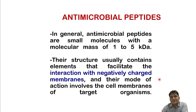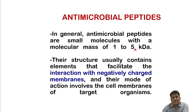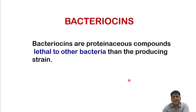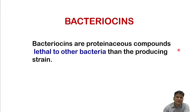Antimicrobial peptides are found in our circulation and serum. They are small molecules with a molecular mass of 1 to 5 kilodalton. Their structure usually contains elements that facilitate interaction with negatively charged membranes, and their mode of action involves the cell membrane of the target organism. These are essentially innate-type antibacterial agents present in our body's circulatory system, and we are trying to exploit higher amounts of these antimicrobial peptides to deal with bacteria through a different mechanism than antibiotics.